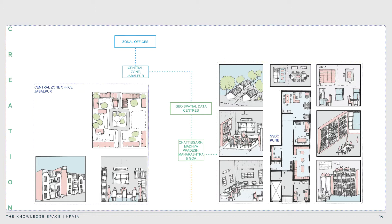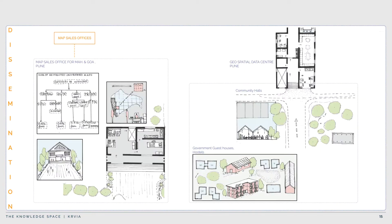The zonal offices are in charge of creation. The country is divided into seven zones, under which come the Geospatial Data Centers shared by two or more states. This diagram shows the Pune Geospatial Data Center office, which comes under the central zone and is the GSTC for Maharashtra and Goa. Its main role is to record, analyze, and create new data. The last element is the map sales office — the only medium of dissemination allowing the public and authorities to purchase maps.